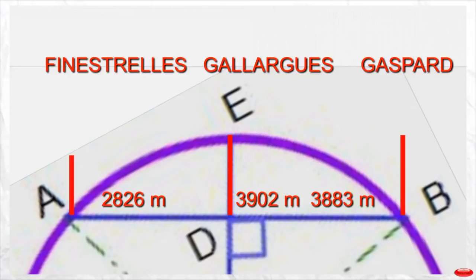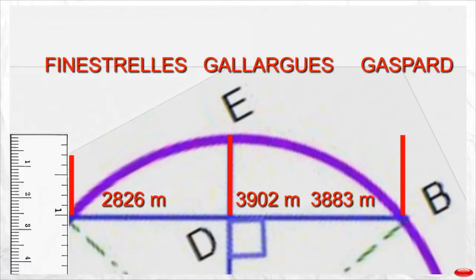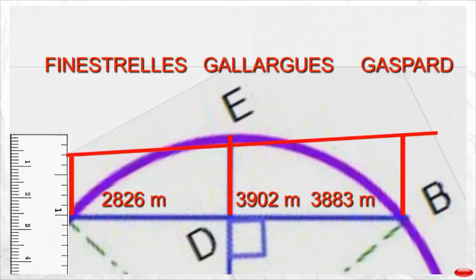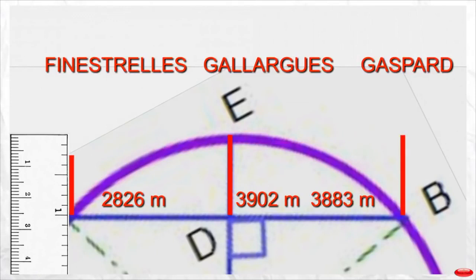The line representing Mount Finestrel is 73 percent of the height of Mount Gaspard. Using a ruler where one represents the height of Mount Gaspard, I have placed the Finestrel line at 75 percent — again favoring the globe model. Now we add the line connecting the peaks of Mount Finestrel and Mount Gaspard.